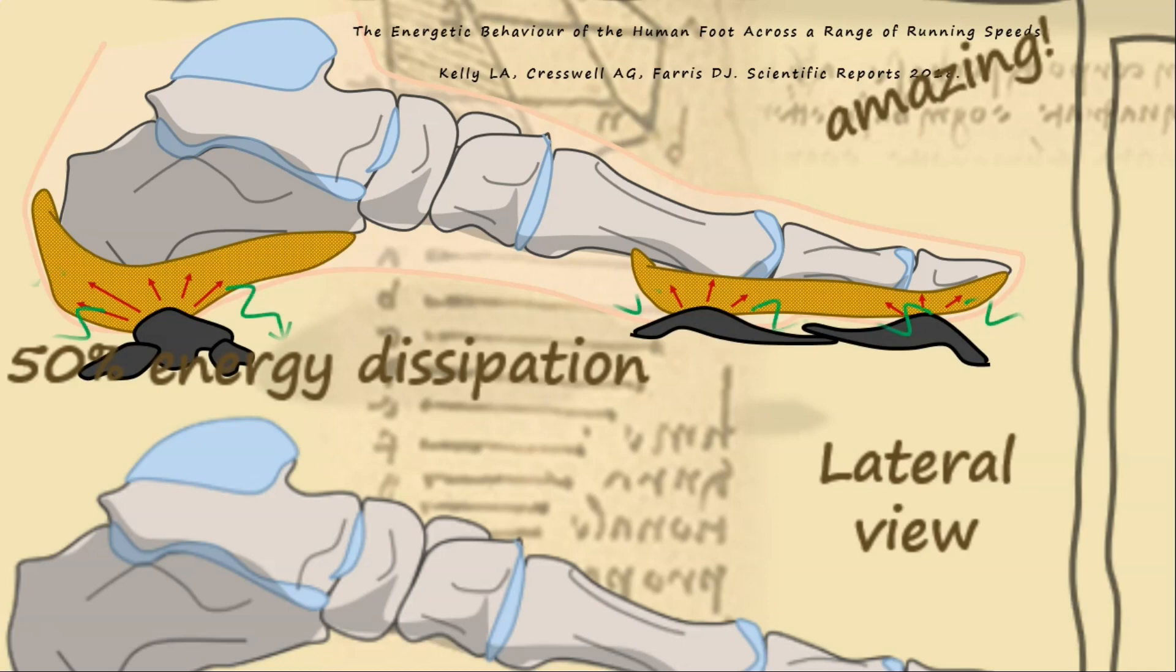These are fibroadipose structures that compress and deform when the foot strikes the ground, absorbing energy in much the same way as viscoelastic dampers used in earthquake-resistant buildings. Studies have shown that up to 50% of the energy entering these fat pads is dissipated before it can be transmitted to the bones of the foot. And this energy dissipation actually increases with higher running speeds.